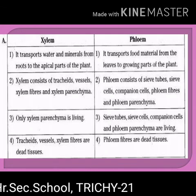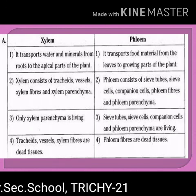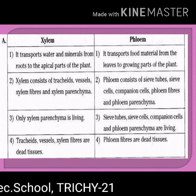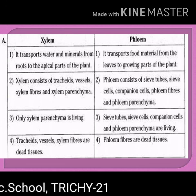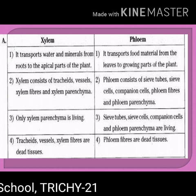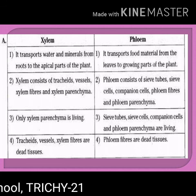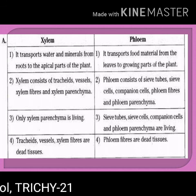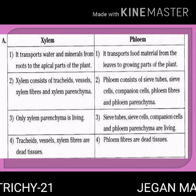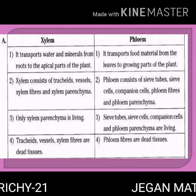Differences between xylem and phloem: Xylem transports water and minerals from the root to the apical part of the plant. Phloem transports food material from the leaves to the growing parts of the plant. Xylem consists of tracheids, vessels, xylem fibers, and xylem parenchyma. Phloem consists of sieve tubes, sieve cells, companion cells, phloem fibers, and phloem parenchyma.